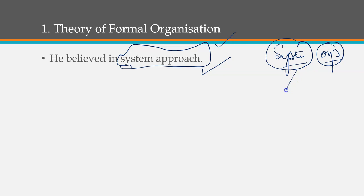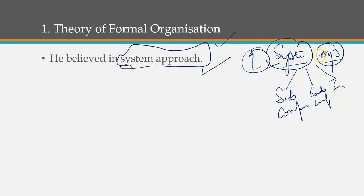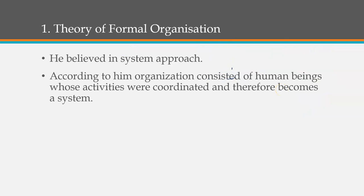A system has many sub-components, and if all those sub-components properly fulfill their roles, then automatically the system will run well. The organization is more like a machine, where every sub-system has its own role and equally contributes to the functioning of the system. He further said that the organization is dependent on coordinated activities, making it more like a system.